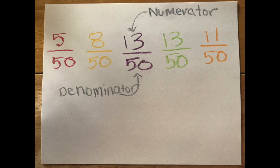The number of Skittles I have for each color will be the numerator. For example, I have 5 red Skittles, so my fraction is 5 red Skittles over 50 total Skittles.